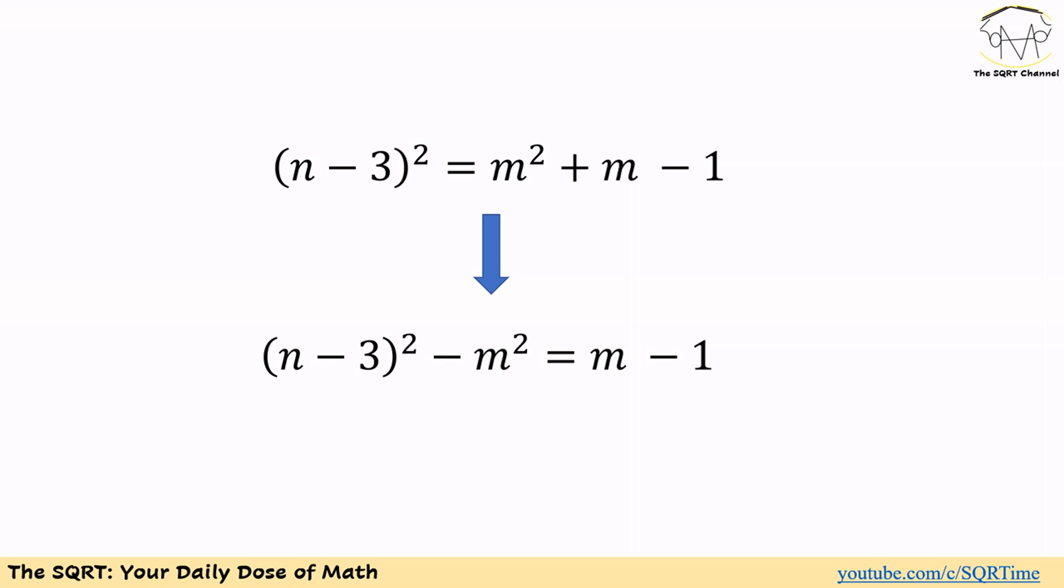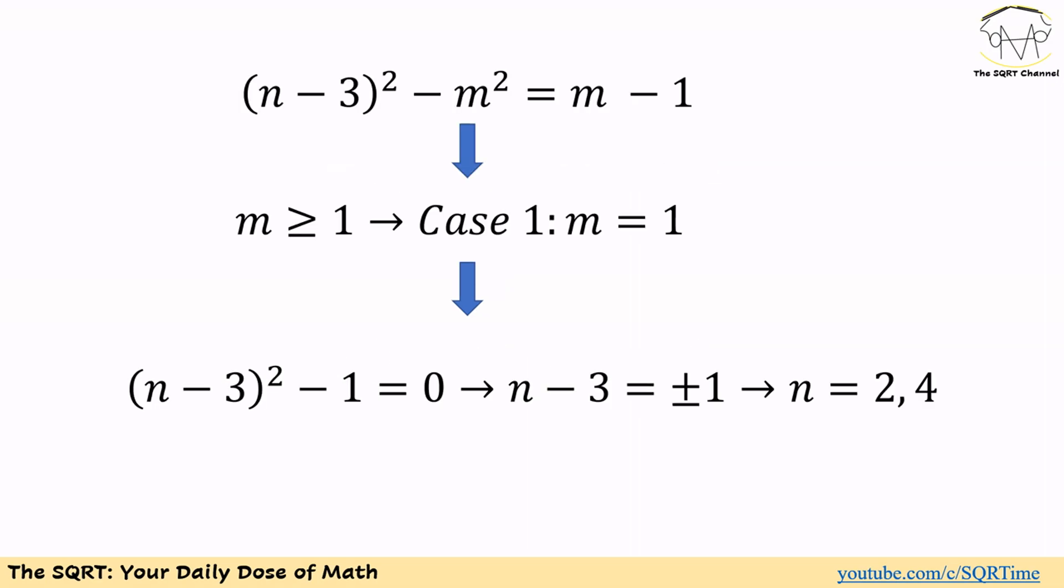Now we have n minus 3 to the power of 2 on one side and m squared on the other side. Let's rearrange this and then we will have n minus 3 squared minus m squared is equal to m minus 1. From here, we need to do some reasoning. First of all, n minus 3 to the power of 2 minus m squared is equal to m minus 1.